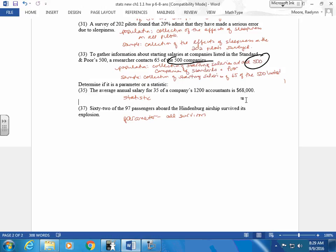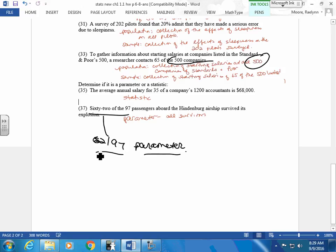This is a tricky one. The 62 of the 97, this is the information about it. So 62 out of 97 people, this is called the parameter. That's what's being said about it. But it's based on the population of all the people in the ship. This is a little trickier because of this.